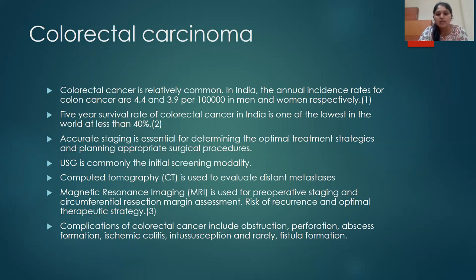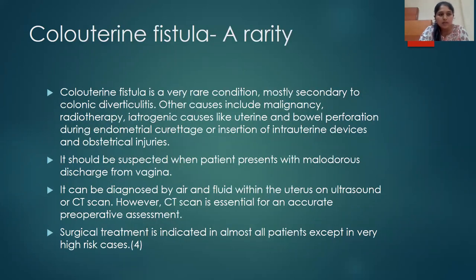Complications of colorectal cancer include obstruction, perforation, abscess formation, ischemic colitis, intussusception, and fistula formation. What we see here is a colorectal uterine fistula, which is very rare — mostly secondary to colonic diverticulitis, but other causes can include malignancy, radiotherapy, or iatrogenic causes such as insertion of intrauterine devices or endometrial curettage causing uterine and bowel cooperation. Obstetrical injuries can also cause a fistula. It should always be suspected when a patient presents with malodorous discharge from the vagina. It can be diagnosed by air and fluid within the uterus on ultrasound or CT scan; however, a CT scan is essential after ultrasound for accurate pre-operative assessment.